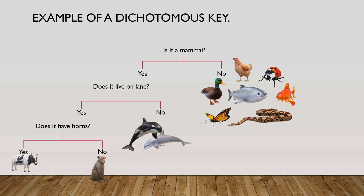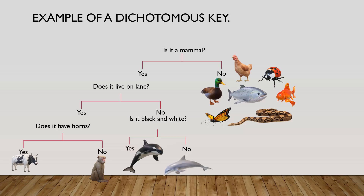I've reached the end of this portion of the dichotomous key. I can do the same with the orca whale and the dolphin, and I would ask a question such as: is the mammal black and white? Yes or no? So now that the four mammals are separated and are in their own groups, I would have to do the same on the right with the non-mammals.